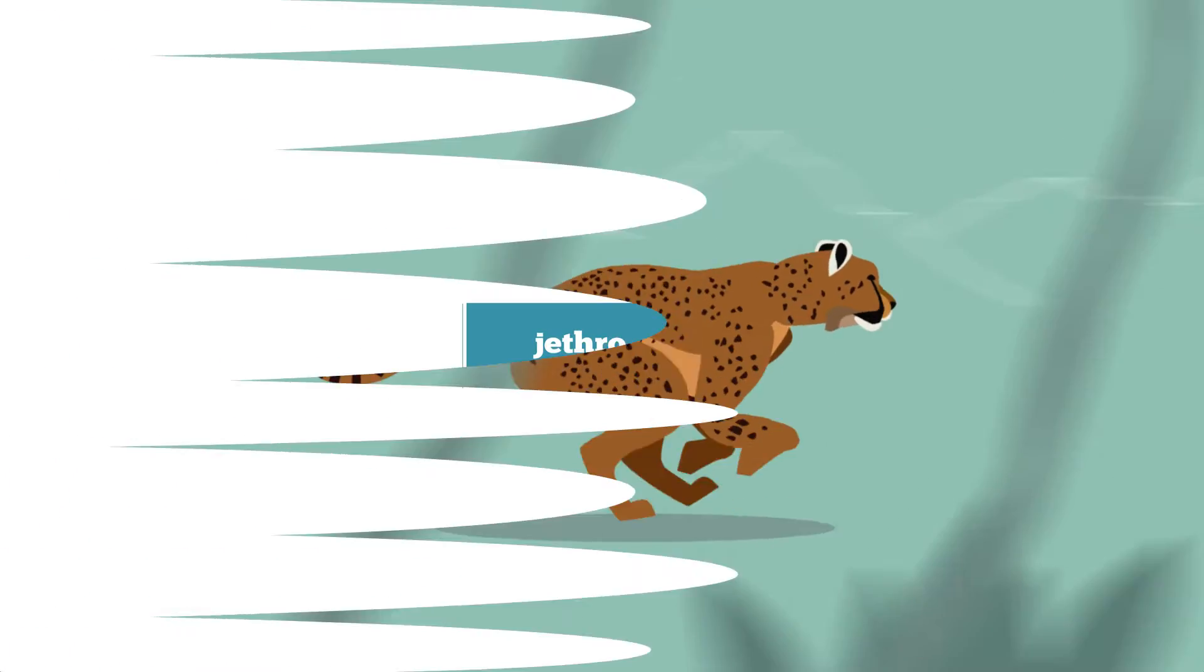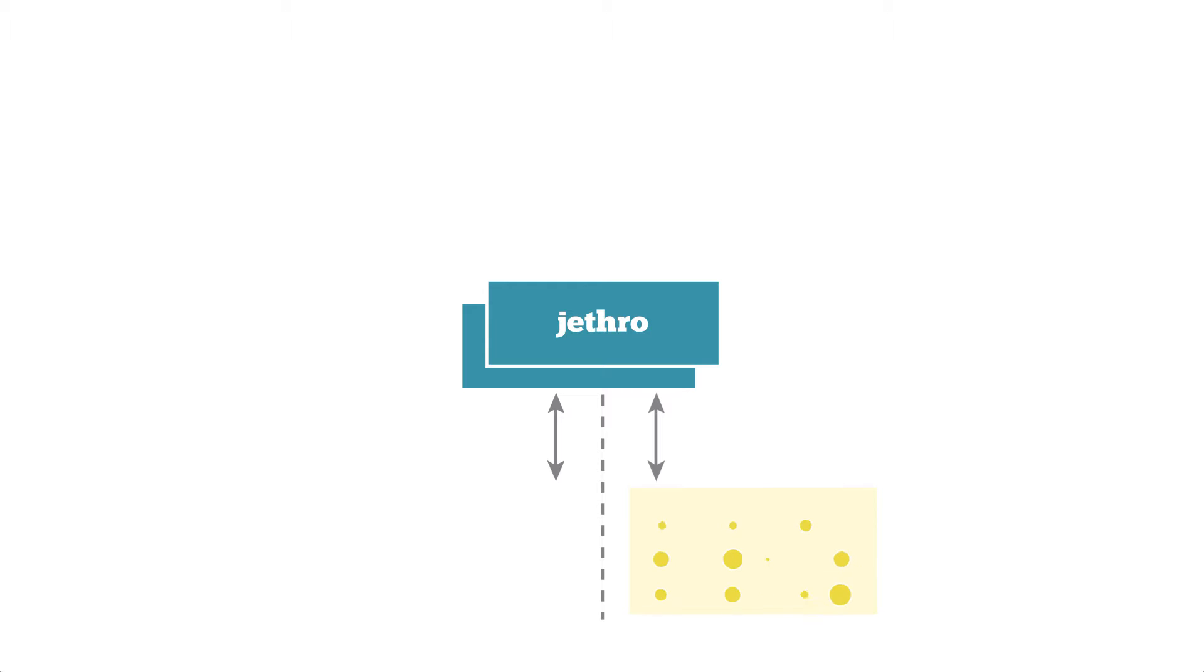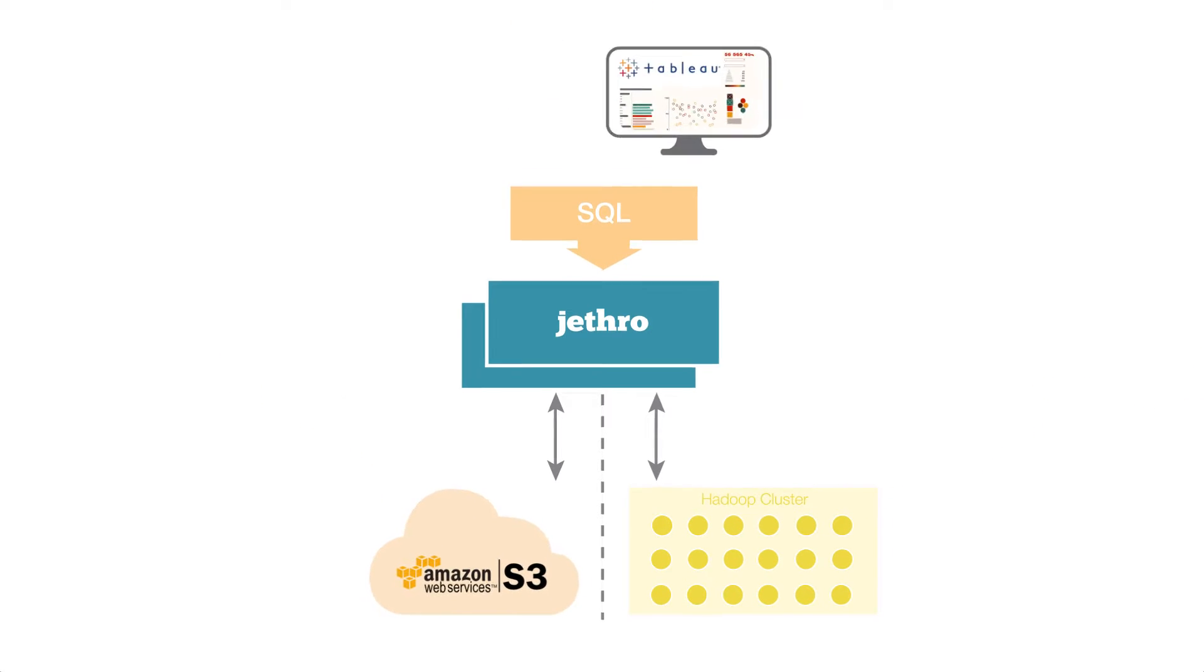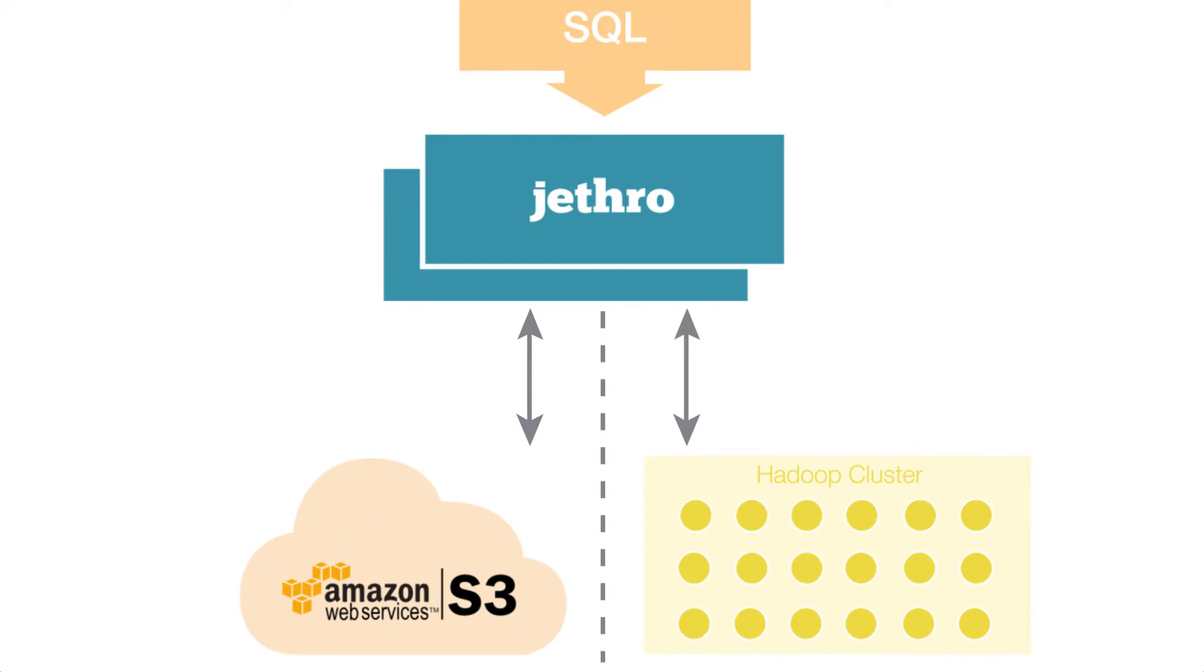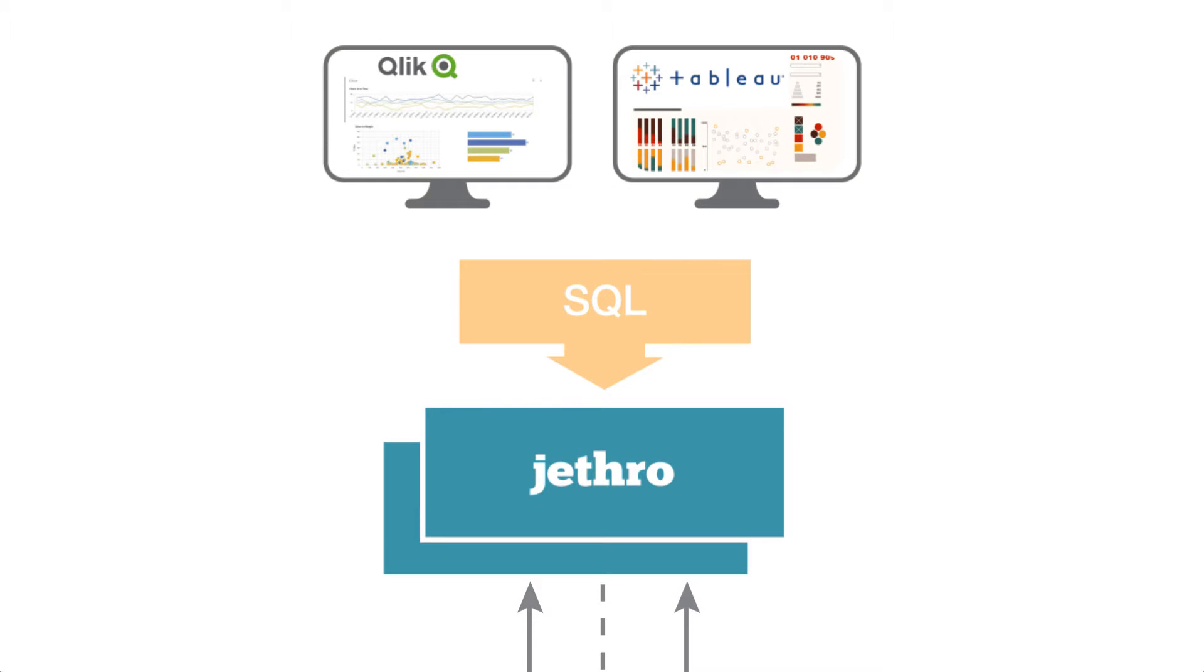Jethro is an indexing and caching server that's unobtrusively sandwiched between a data source like Hadoop or Amazon S3 and a BI dashboard such as Tableau or Qlik.